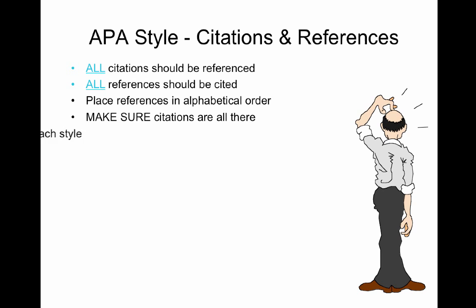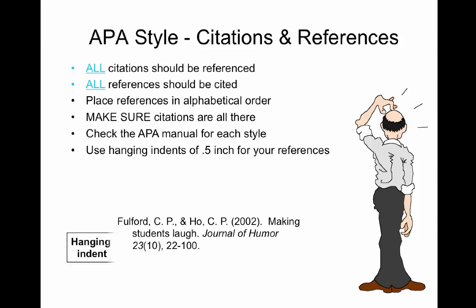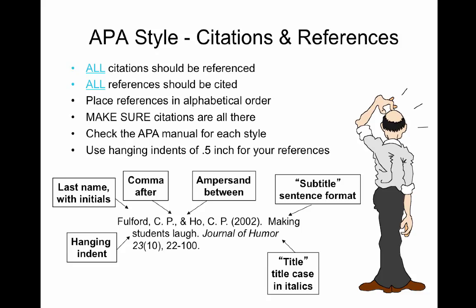You want to use hanging indents of a half an inch for your references. This is a hanging indent — the second and following lines are indented. In the reference, you use the last name with the person's initials. A comma goes after each one. There's an ampersand between the list and the last person. For the subtitle, use a sentence format. For the title, use title case in italics. Title case means that all of the major words are uppercase. Use periods after each major section and there's no space between the issue number and the page numbers.